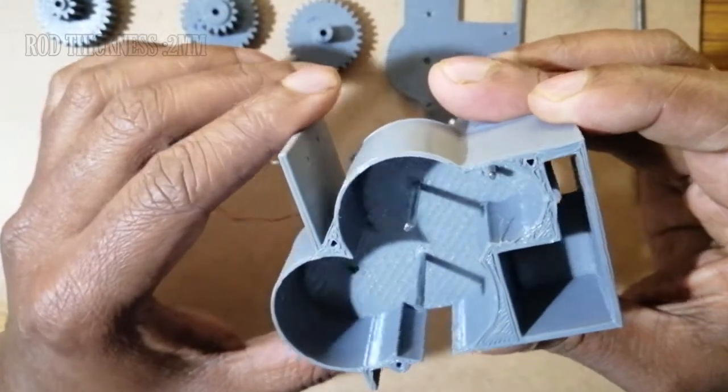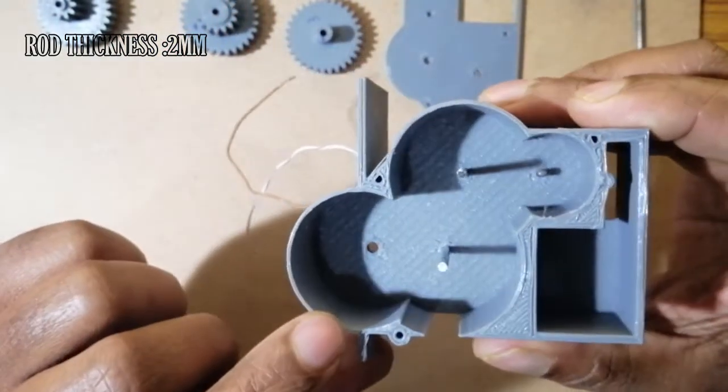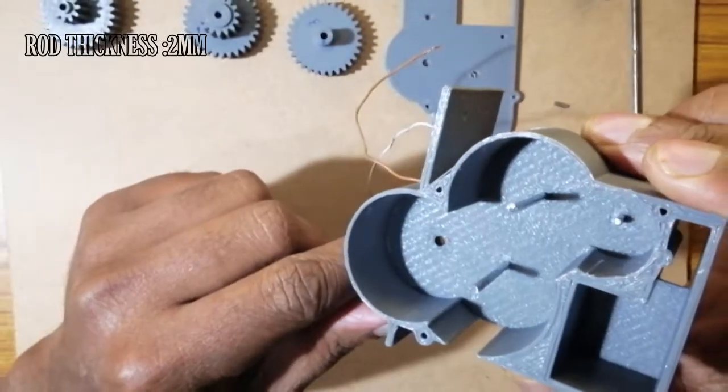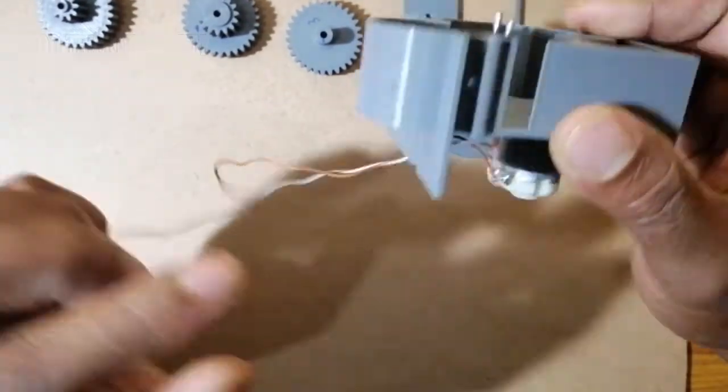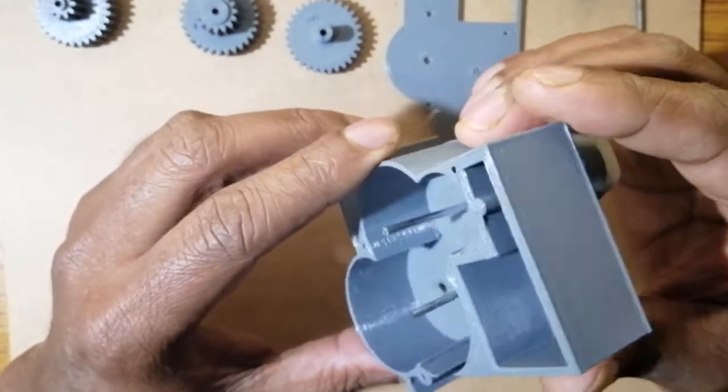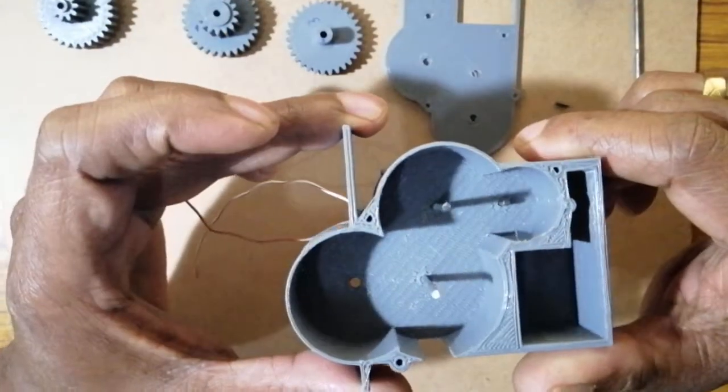And here it's going to be the driving shaft of this gearbox which passed through this hole and can be used to drive the tires. Okay, so let's start the assembling process.